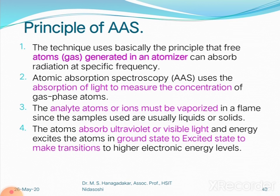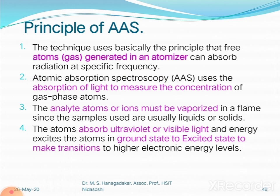The first principle is that this technique uses the principle that free atoms or gas generated in an atomizer can absorb radiation at a specific frequency. Atomic absorption spectroscopy uses the absorption of light to measure the concentration of atoms present in the gaseous state.